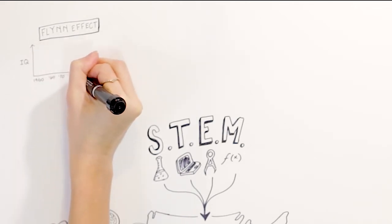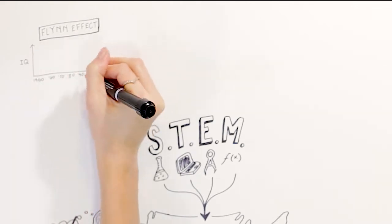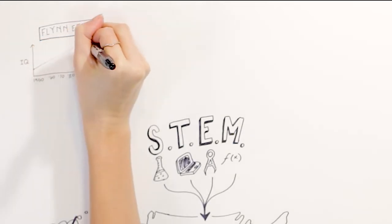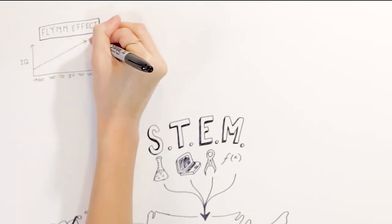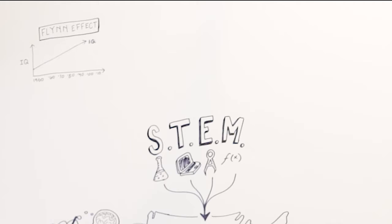However, a similar reverse trend has been seen in something called a CQ score, which is a measure of the ability to think creatively. Interestingly, researchers have found a correlation between IQ and CQ scores in something they coined lifetime creative accomplishment.